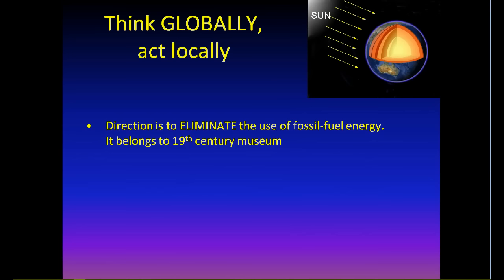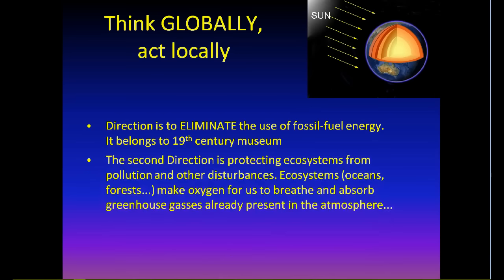Direction is to eliminate the use of fossil fuel energy. It belongs to 19th century museum. The second direction is protecting ecosystems from pollution and other disturbances. Ecosystems make oxygen for us to breathe and can absorb greenhouse gases already present in the atmosphere.